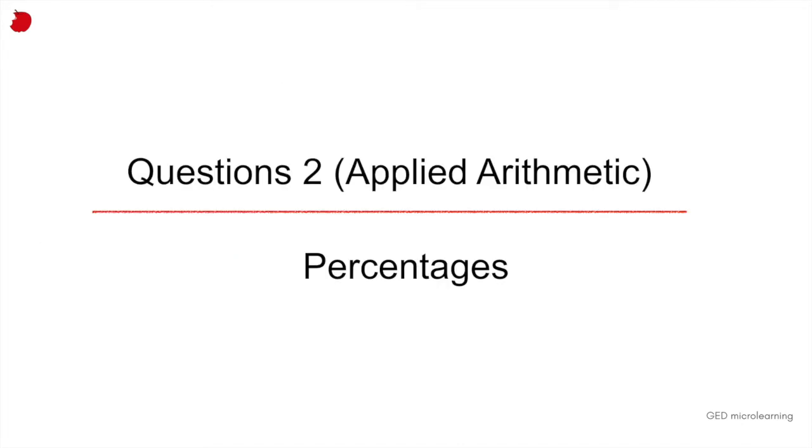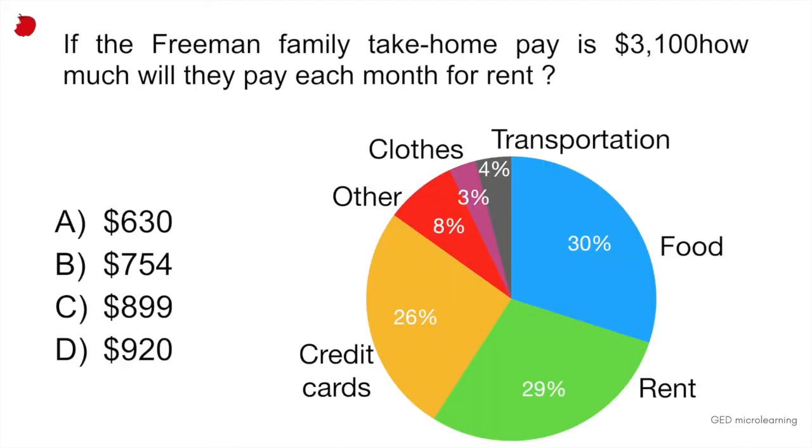Question 2, applied arithmetic, is a percentage question. Here they're giving you a circle graph, sort of like a pie graph. Essentially it's telling you in the question that this is the budget of a family called the Freeman family. The graph tells you how much of their money they spend on different items every month.